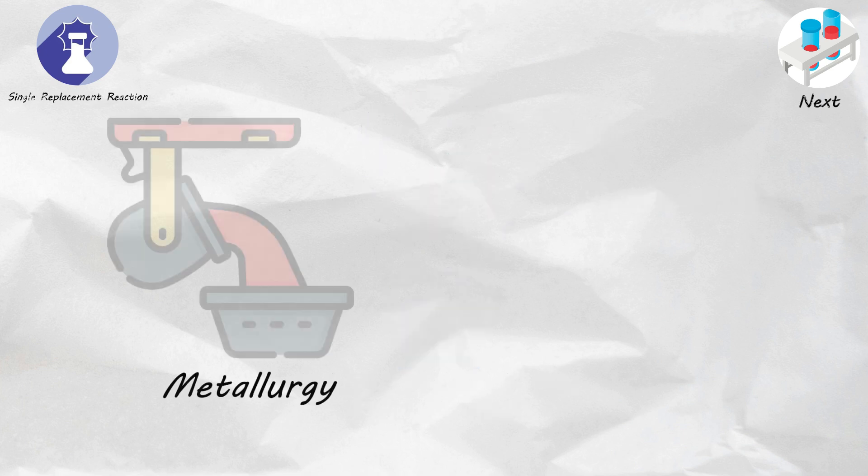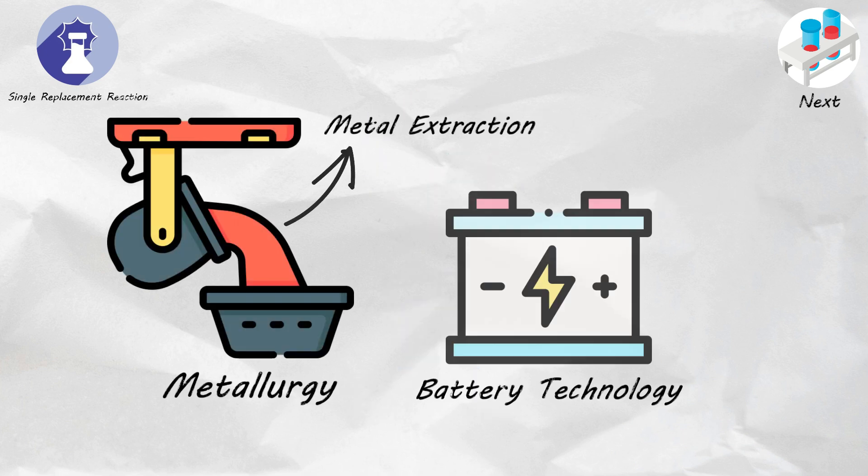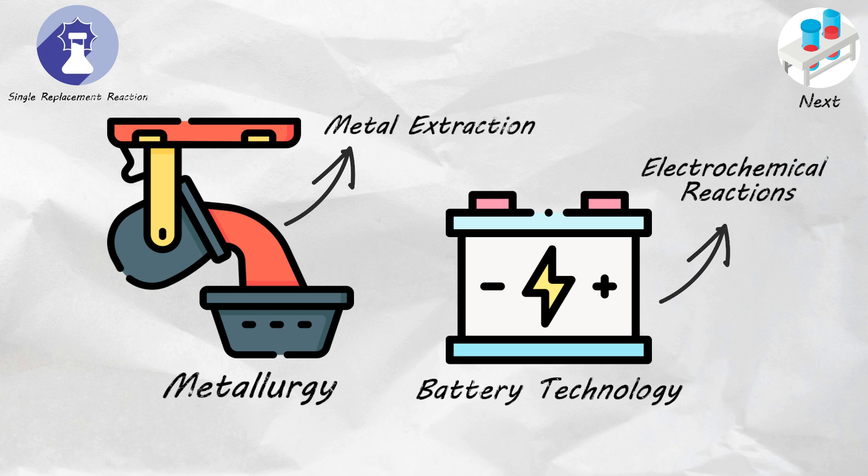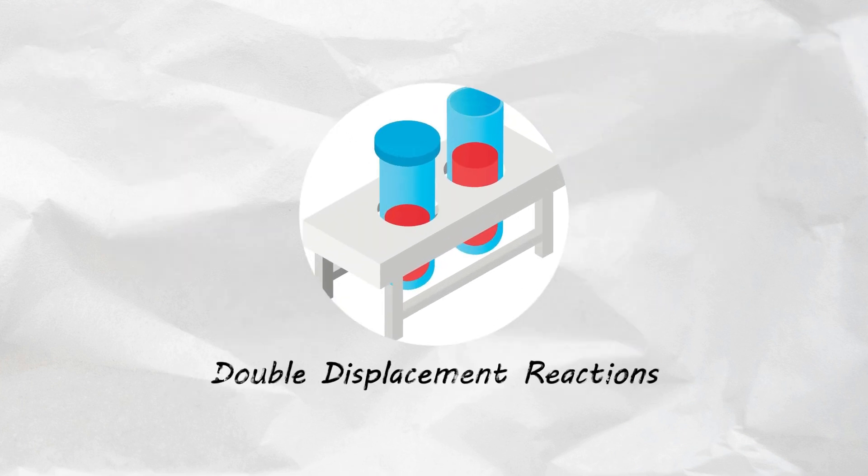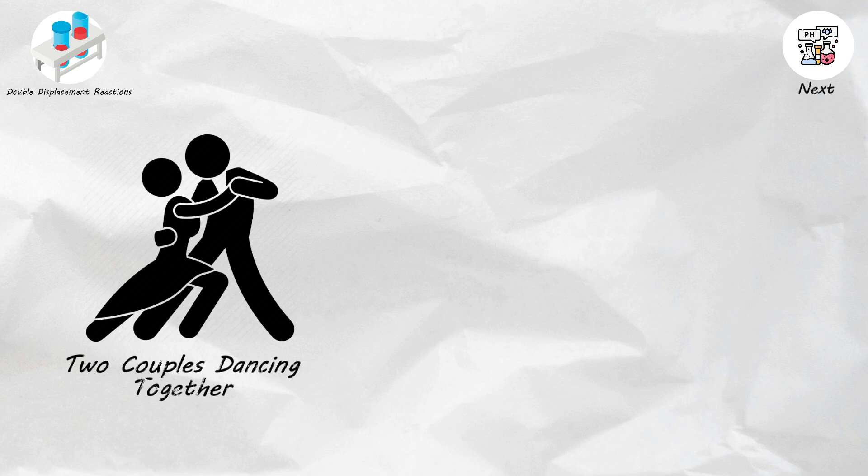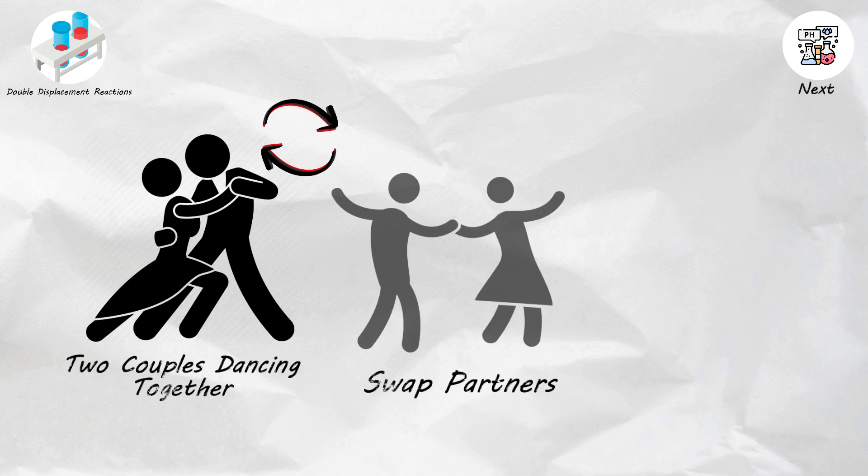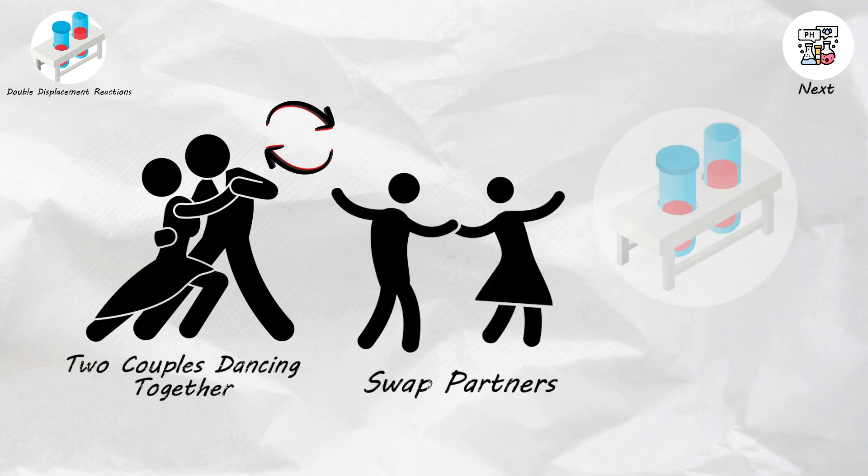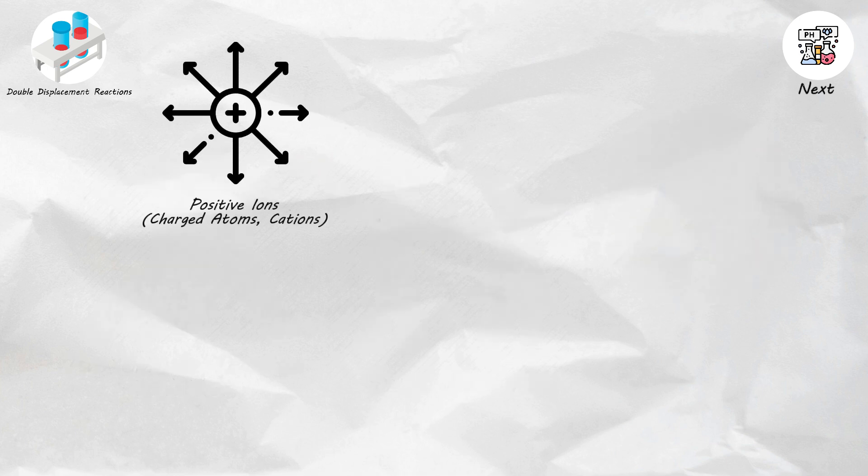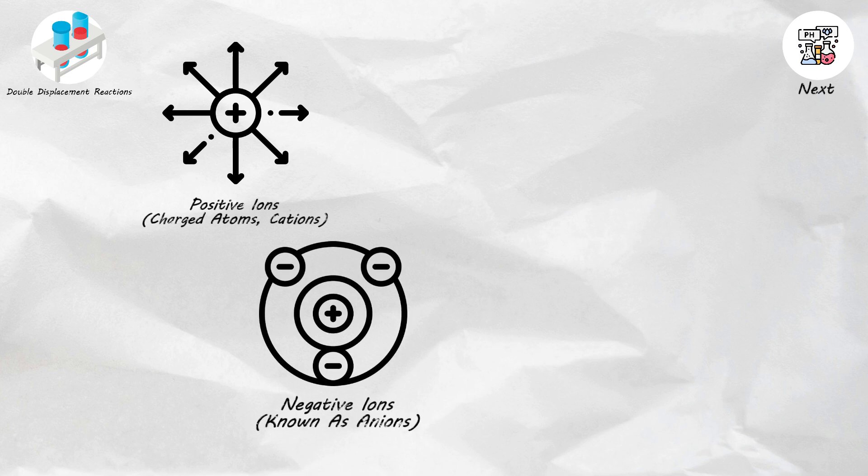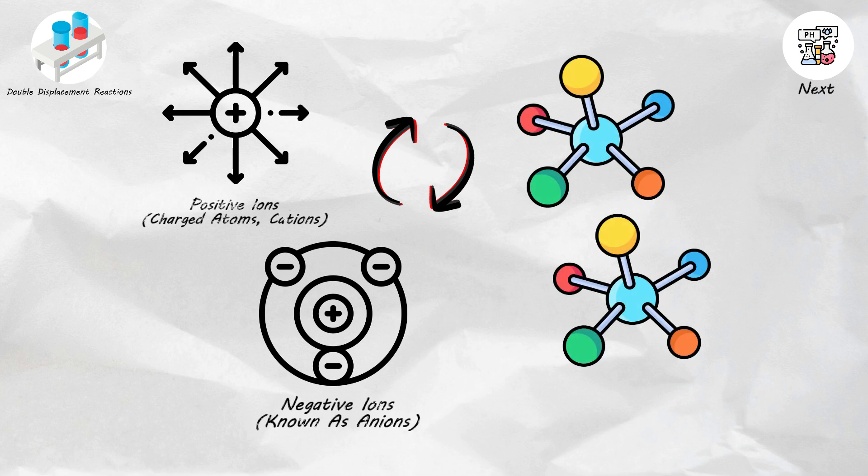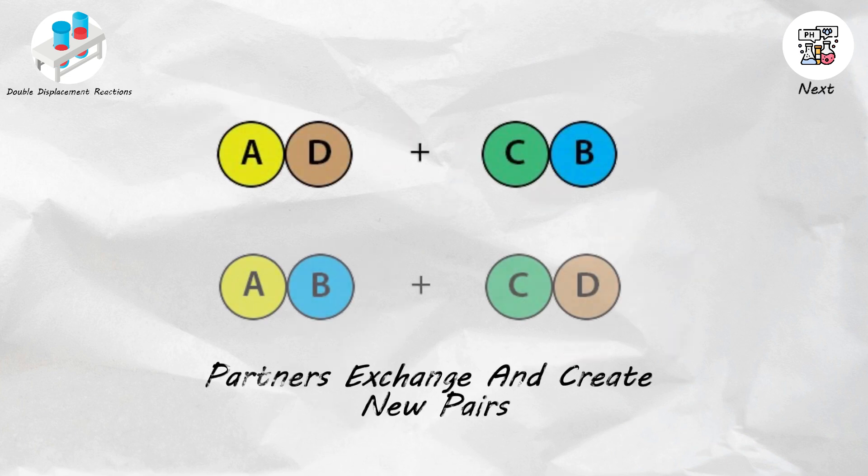These reactions are used in metallurgy for metal extraction and in battery technology for electrochemical reactions. Double displacement reactions. Imagine you have two couples dancing together, and suddenly they decide to swap partners. Double displacement reactions work in a similar way. In these reactions, the positive ions, charged atoms called cations, and negative ions, known as anions, in two compounds, switch places to form two new compounds. It's like a chemistry square dance, where partners exchange and create new pairs.